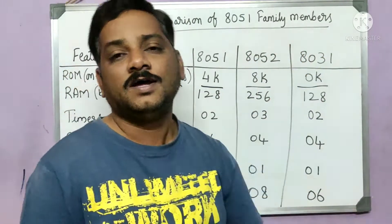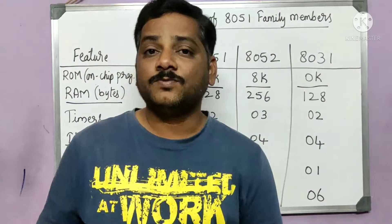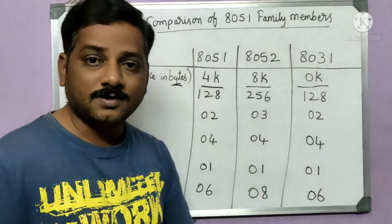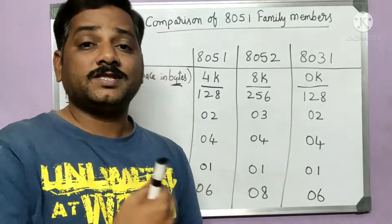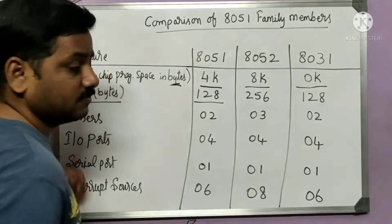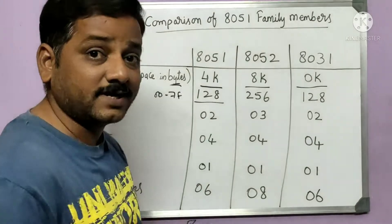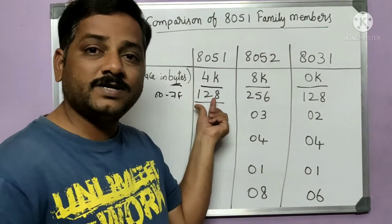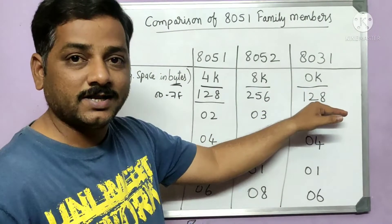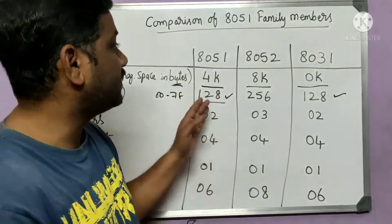Next, we have RAM — Random Access Memory — also measured in bytes, used to store data like inputs and outputs. The RAM for the 8051 is 128 bytes, from address 00 to 7F in hexadecimal. For the 8052, it is double: 256 bytes. For the 8031, it is 128 bytes again — the same as the 8051.